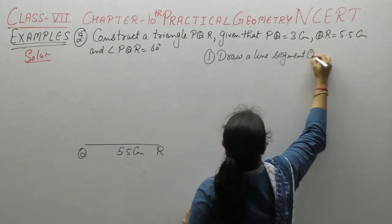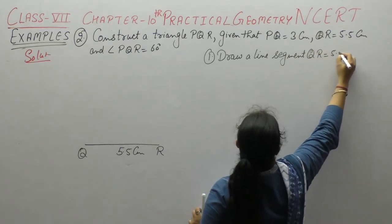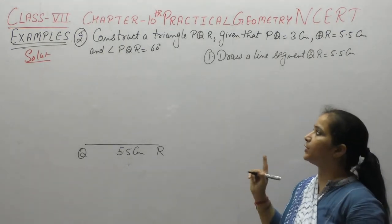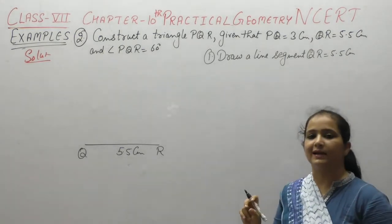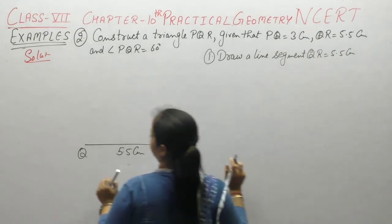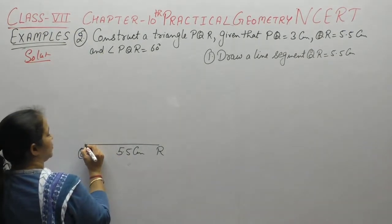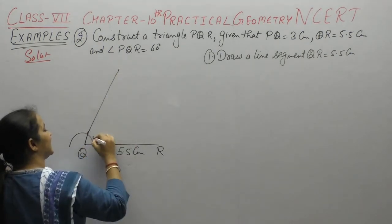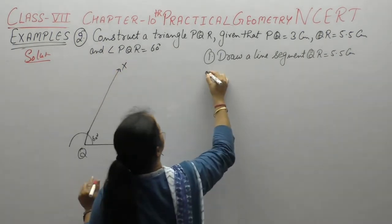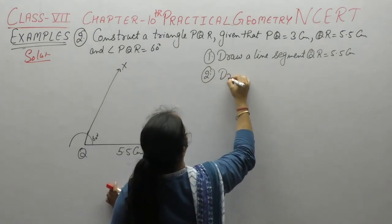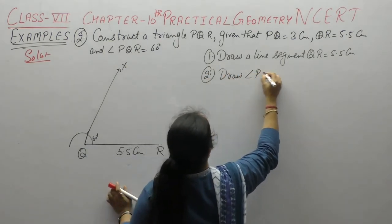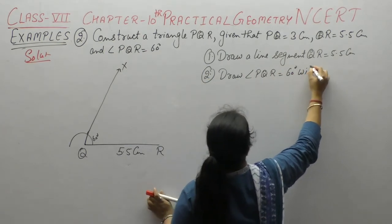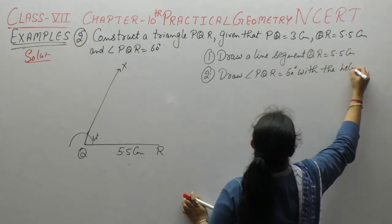Draw a line segment QR equals 5.5 cm. Angle PQR 60 degree means angle Q peh 60 degree. To Q ko center maan ke aak lagai, this angle is 60 degrees. Draw angle PQR equals 60 degrees with the help of compass.